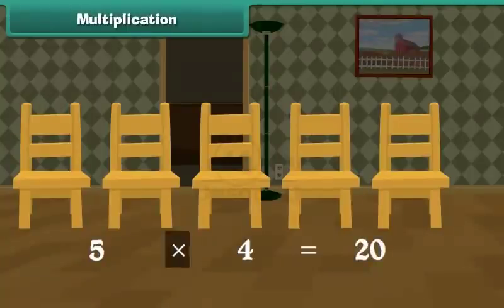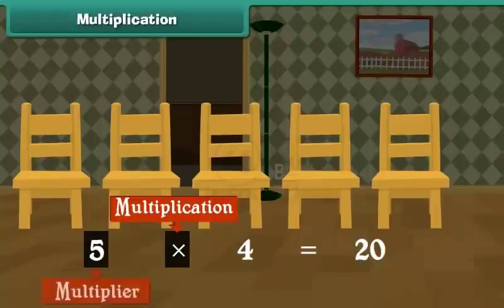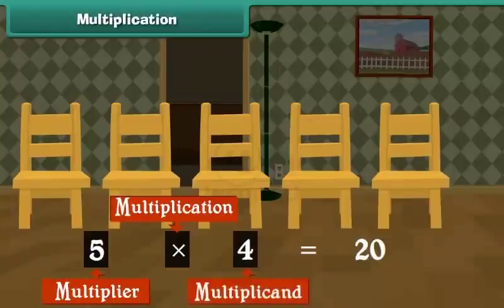We can write it as 5 into 4 is equal to 20. The cross is the sign for multiplication. The first number, 5, is called the multiplier. The second number, 4, is called the multiplicand. The result of multiplication is called the product.